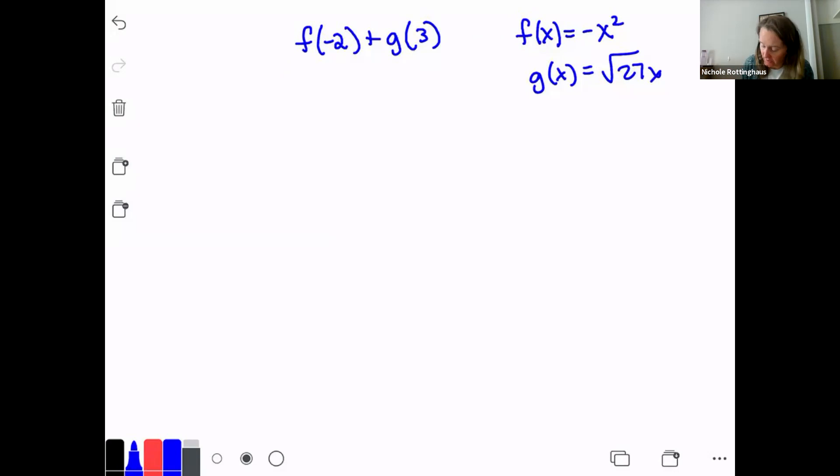So we need to find f of negative 2 and then add it to g of 3. So let's find f of negative 2. f of negative 2 is going to be negative negative 2 squared. The opposite of negative 2 squared. So this is really important. The negative is not in the parentheses there. So order of operations says I have to do the x squared and then take the opposite of it. So when I do that negative 2 squared is a positive 4. But I want the opposite of that. So f of negative 2 is negative 4.